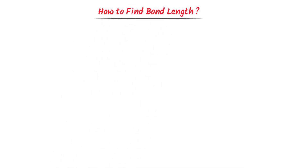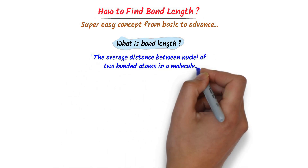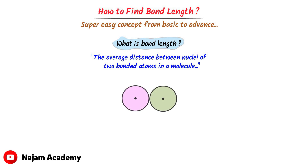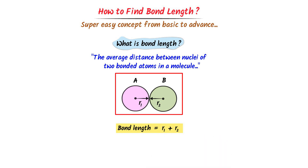How to find bond length? I will teach you the super easy concept of bond length from basic to advanced with easy tricks. Firstly, what is bond length? The average distance between the nuclei of two bonded atoms in a molecule is called bond length. For example, consider a diatomic molecule where the atomic radius of atom A is r1 and the atomic radius of atom B is r2. The bond length of this molecule is equal to r1 plus r2. Remember that bond length is the distance between the centers of two atoms bonded together.